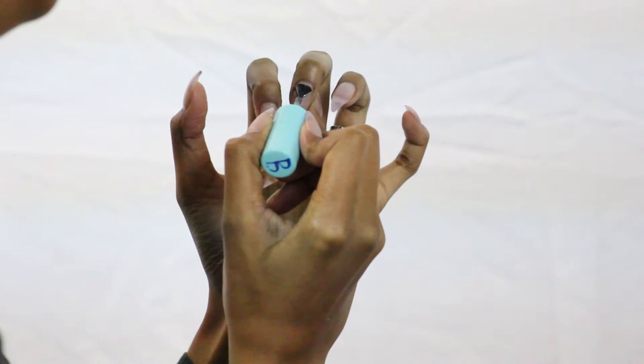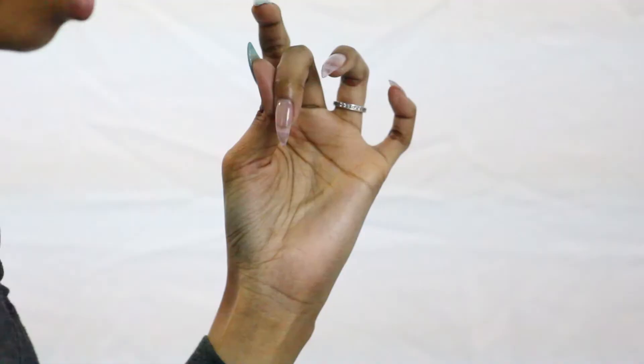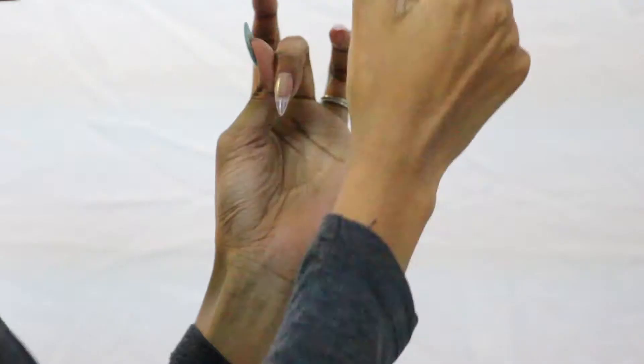Now we are applying the base coat. You want to get all the way to the cuticles, all the way to the bottom, and don't forget to seal the edges as we go.